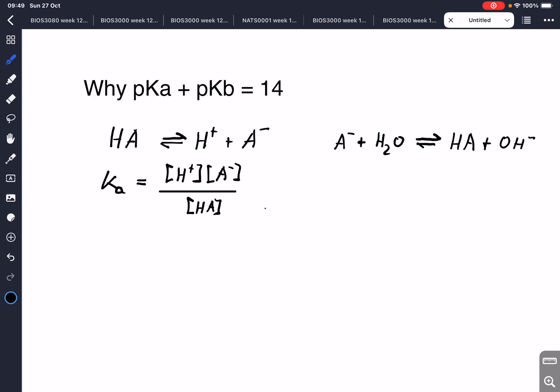And for that we can write the dissociation equation or the equilibrium equation Kb equals, and we have HA multiplied by the hydroxide concentration, divided by the concentration of the A-, multiplied by the concentration of water. The concentration of water is 55.6 molar and stays constant.